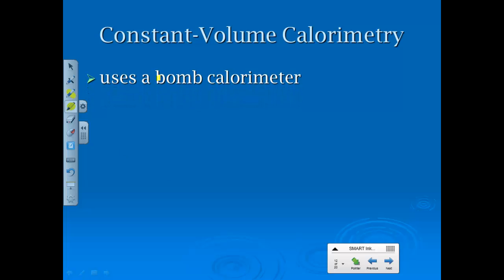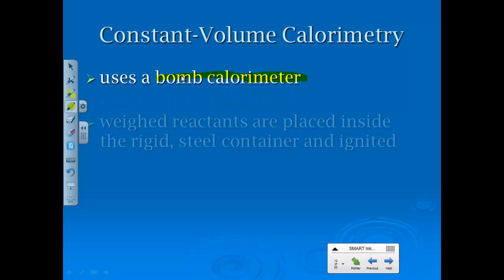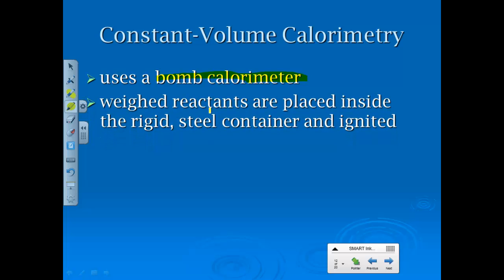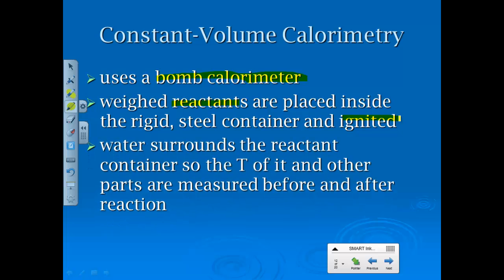Constant volume uses what's called a bomb calorimeter. We are not going to use one of these, because I don't have one in class. But essentially, you take reactants that have already been pre-massed or pre-weighed. You place them inside this rigid steel container, and you ignite them, hence the name bomb calorimeter.